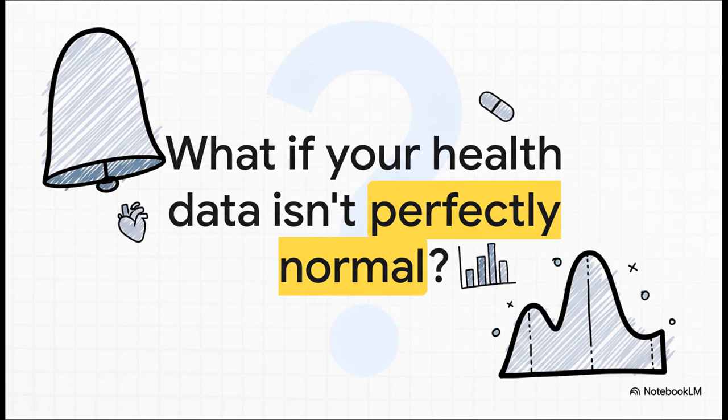This is the big question, isn't it? We all learn about these incredibly powerful statistical tools, like T-tests and ANOVA, but they all come with this huge catch. They assume our data fits that perfect, beautiful bell curve. But what happens when real-world patient data, your data, doesn't play by the rules?